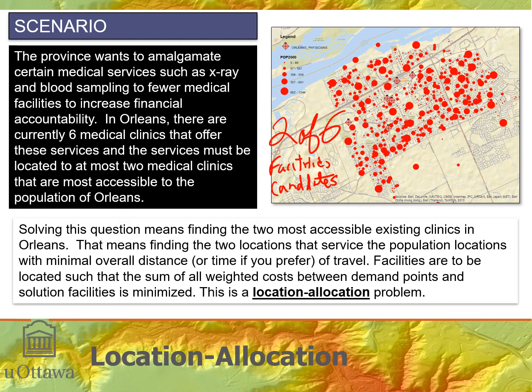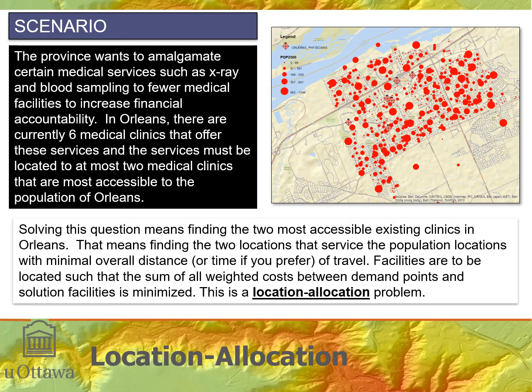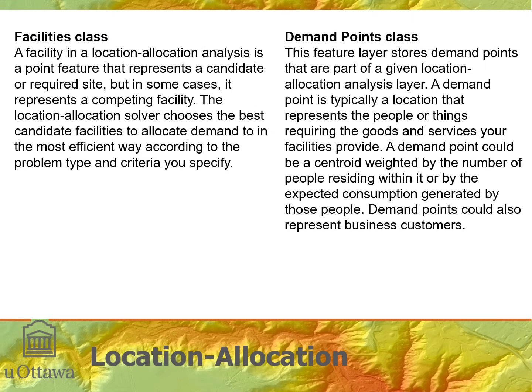We have population as the demand for services like x-ray and blood sampling, and the province needs to locate these in the most accessible way possible. This becomes a location allocation problem within the network — an optimization problem where we need to find the two facilities that optimize their location. That means minimizing some function, in this case minimizing the total time traveled by the population, where population values become weights.